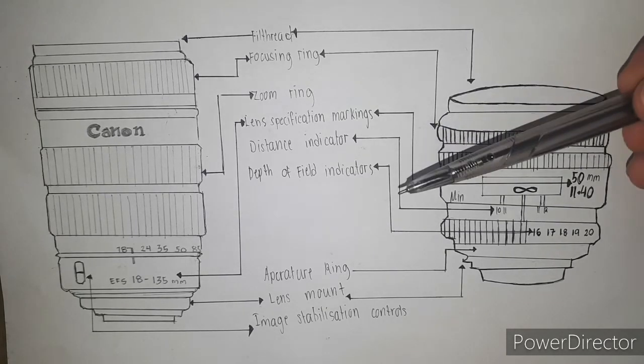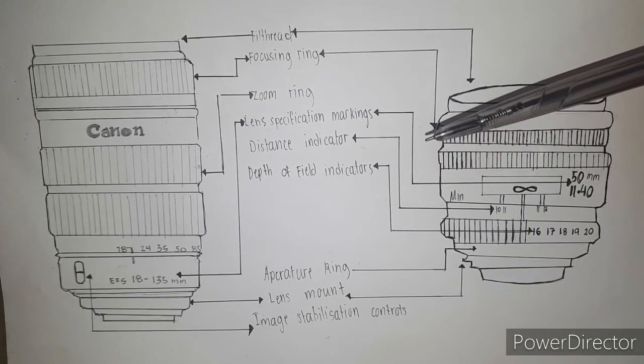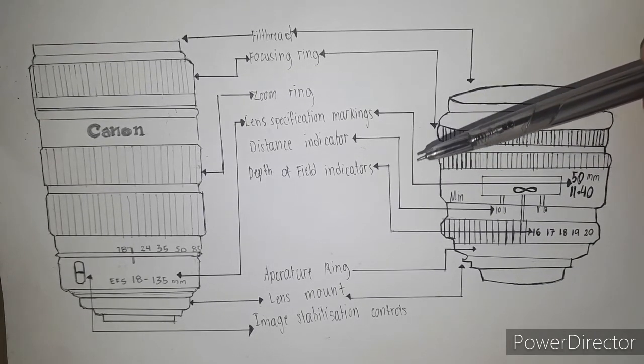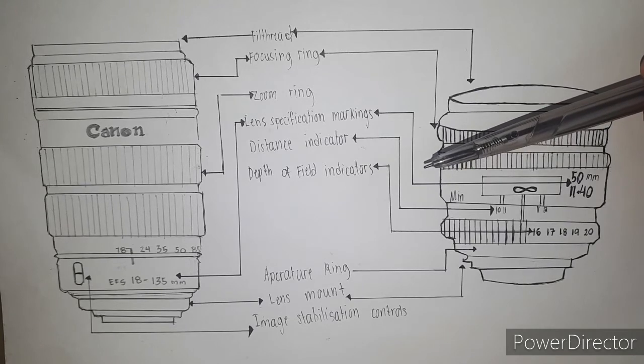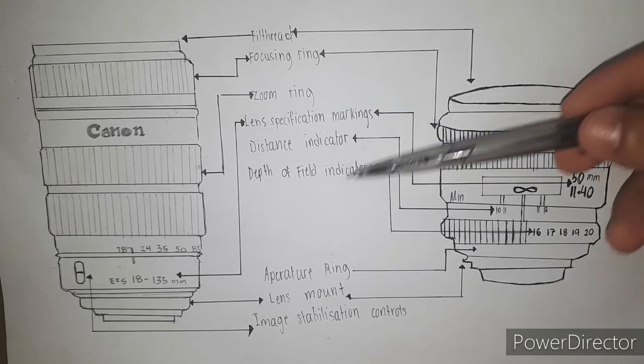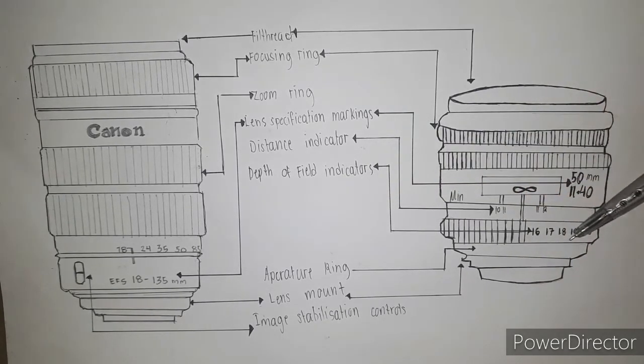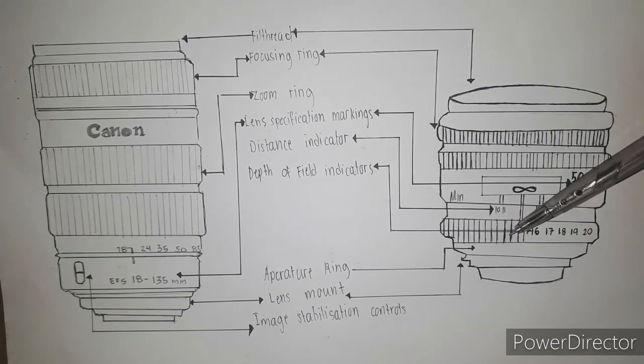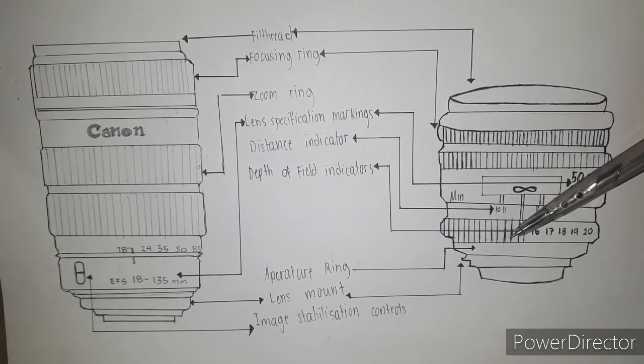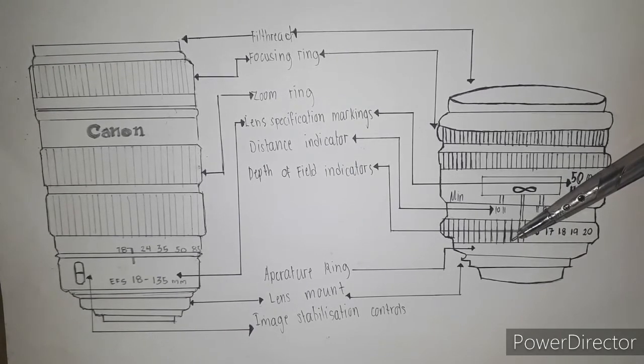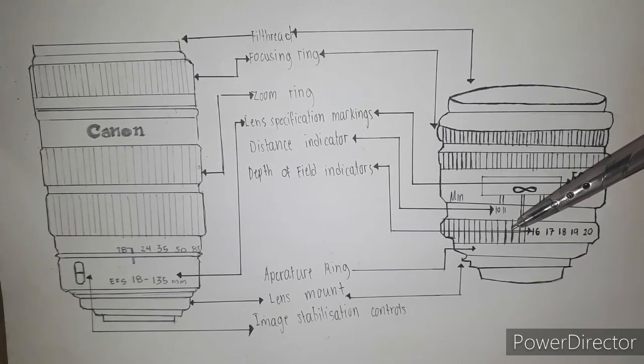Next is the depth of field indicators. This part is the depth of field indicators. It is the primary object of the invention to provide a camera having a focusing lens system and an automatic exposure control system with a depth of field indicator that indicates the depth of field as a function of both scene brightness and scene or object distance.